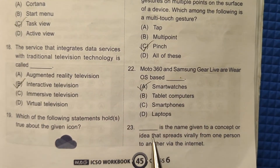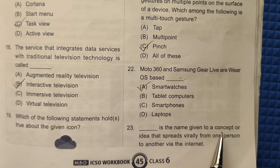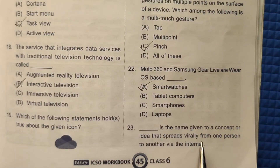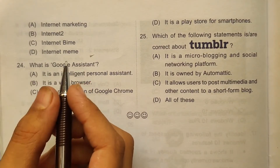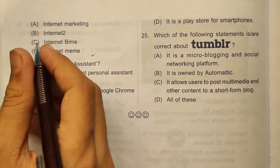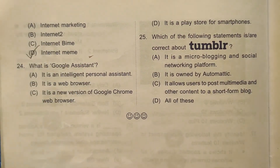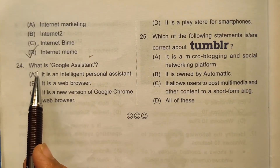Question 23: What is the name given to a concept or idea that spreads virally from one person to another via the internet? It is called an internet meme. The correct answer will be option number D.